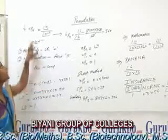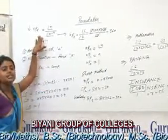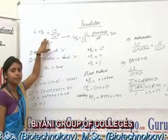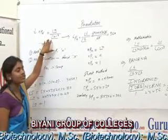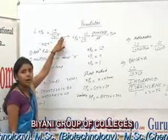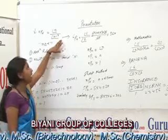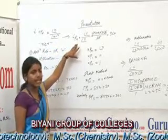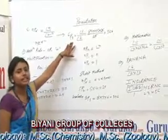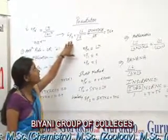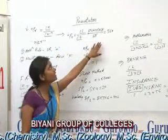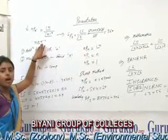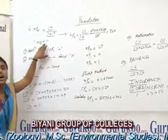Permutation is denoted by NPR, where N is the number of total things and R is the number of things being selected. The formula for permutation is factorial N upon factorial (N minus R). For example, if N is equal to 6 and R is equal to 4, the value of 6P4 is equal to 360. Also, N is always greater than or equal to R.